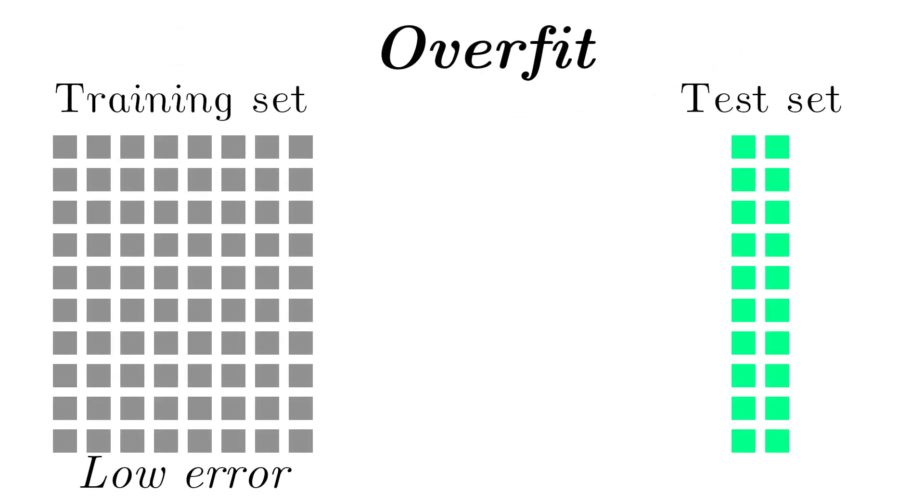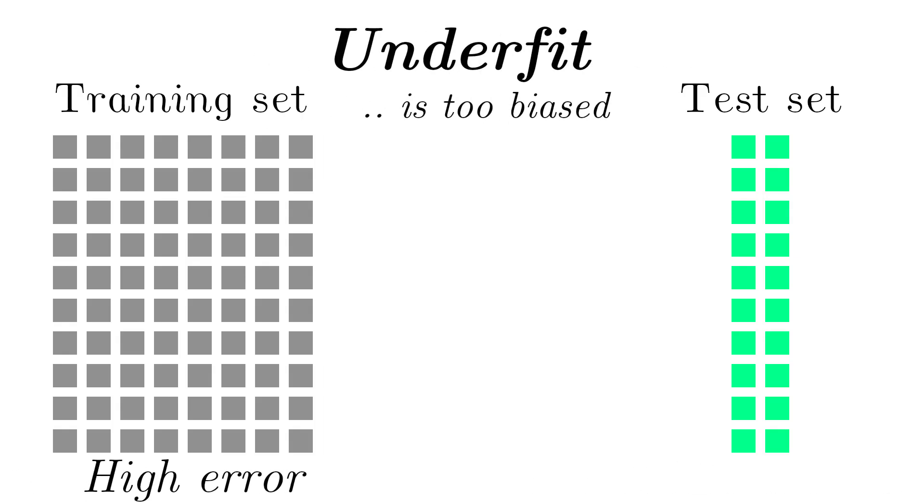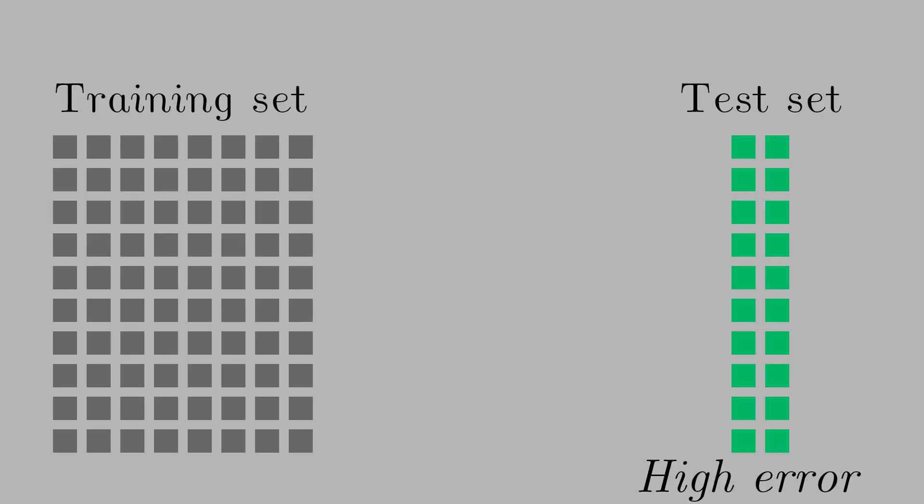Overfit means you have a low error on the training set but a high error on the test set. Underfit means you have a high error on the training set and a high error on the test set as well.